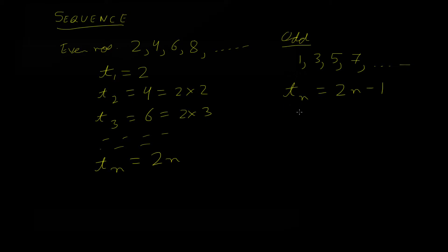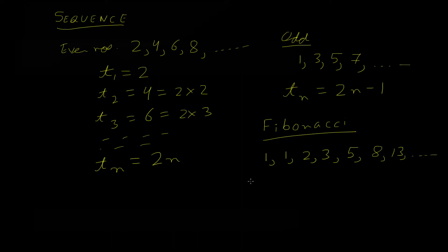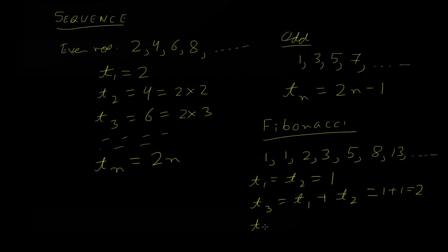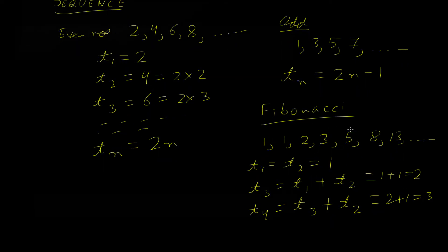However, it is not necessary that every sequence can be represented by such formulas. One very interesting sequence we will talk about later is called the Fibonacci sequence. In this sequence we have: 1, 1, 2, 3, 5, 8, 13, and so on. The first term equals the second term equals 1, and then the third term is obtained by adding the first and second terms: 1+1 = 2. The fourth term is t3 + t2 = 2+1 = 3. Then 3+2 = 5, 5+3 = 8, and so on.